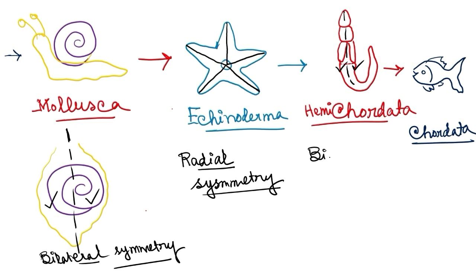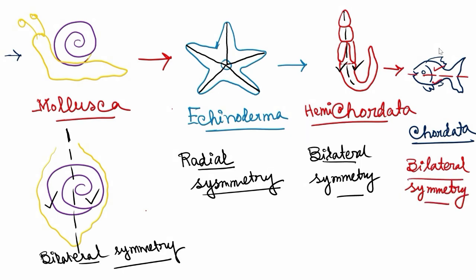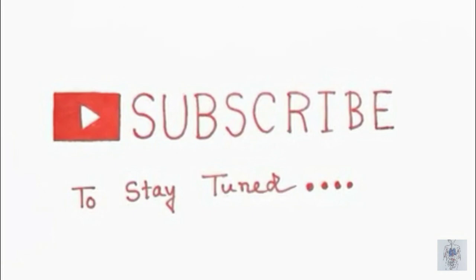So the next phylum, that is hemichordata, if we draw a line between, we can get equal halves—that is bilateral symmetry. And that is also same in case of chordata. So in case of chordata, we can also see bilateral symmetry. In the next video, we will talk about the body plan and the coelomes.